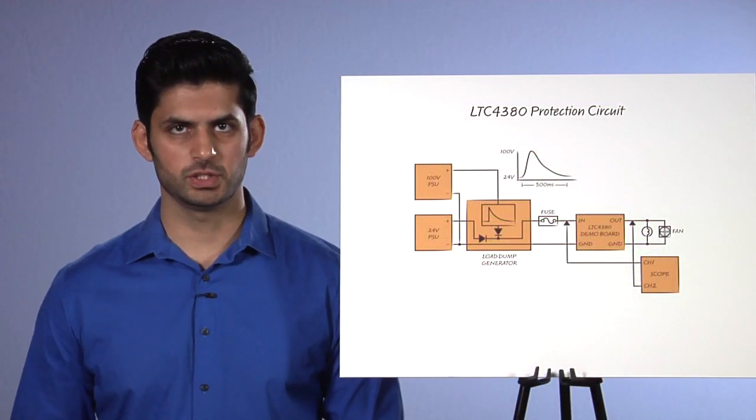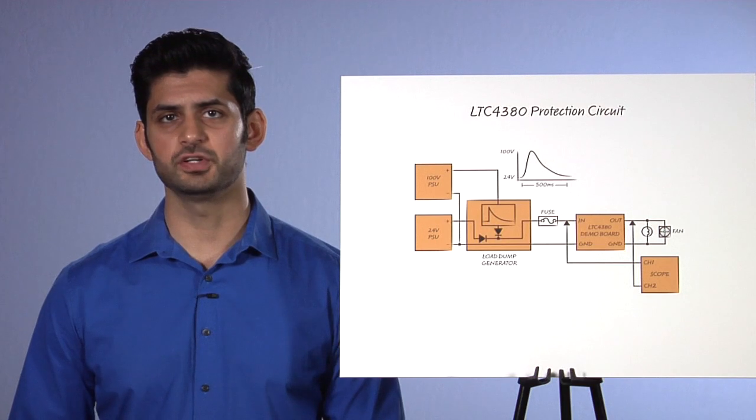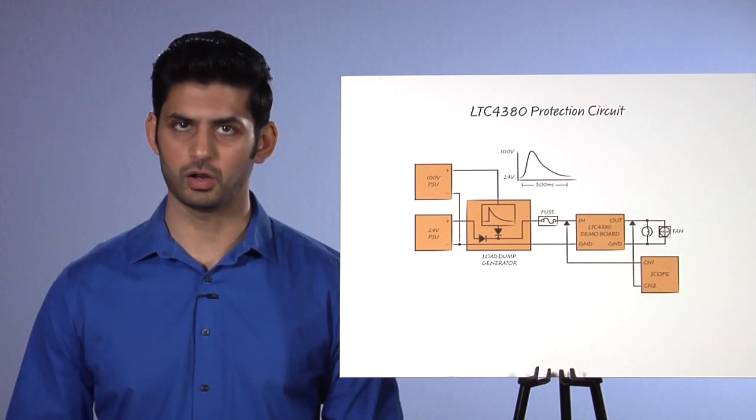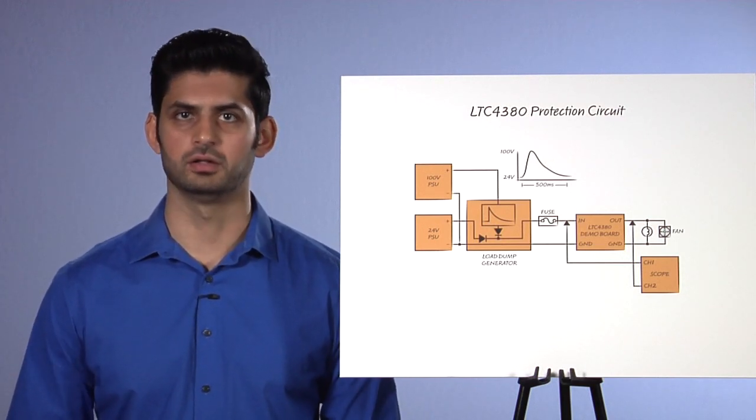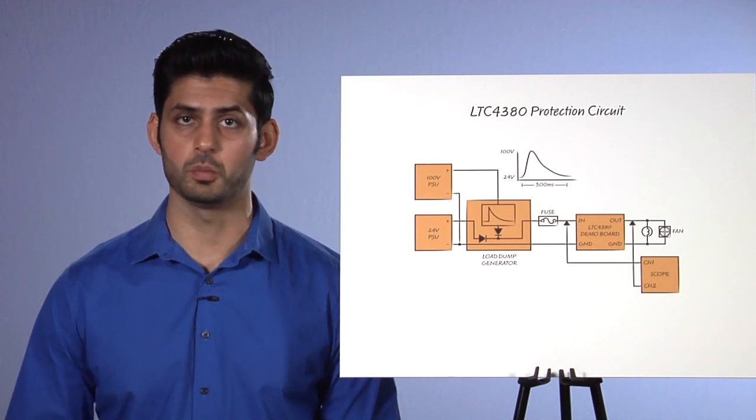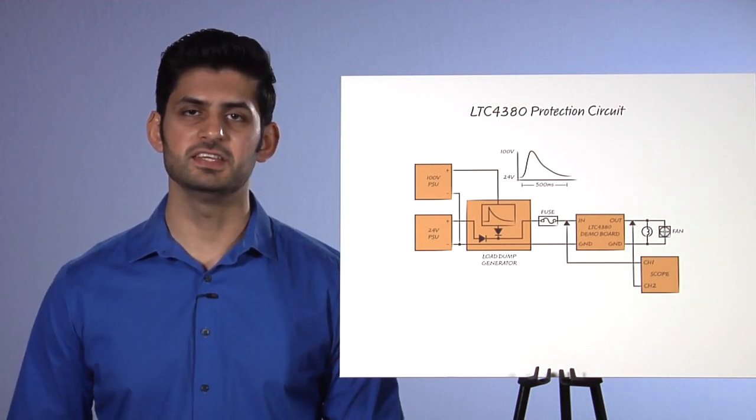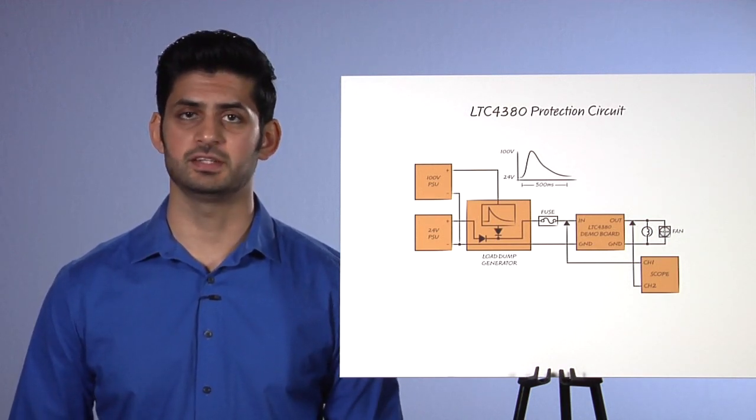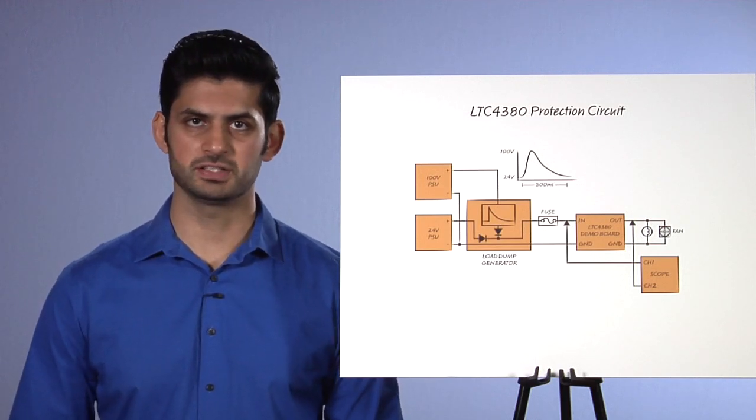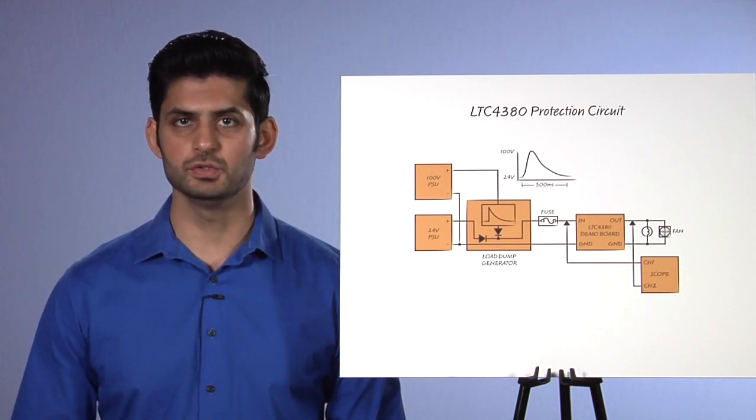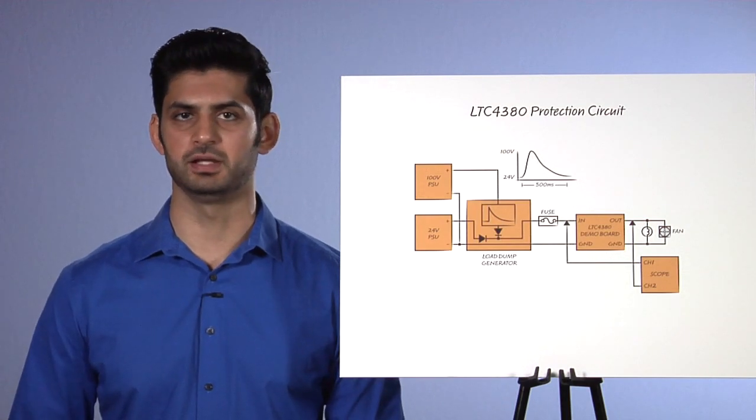Once the overvoltage situation is gone, the LTC4380-2 will auto-retry and turn back on, providing power to the load automatically. A TVS in this situation would not stand a chance. It would fail, and in order to bring the system back online, the fuse and the TVS would have to be replaced.